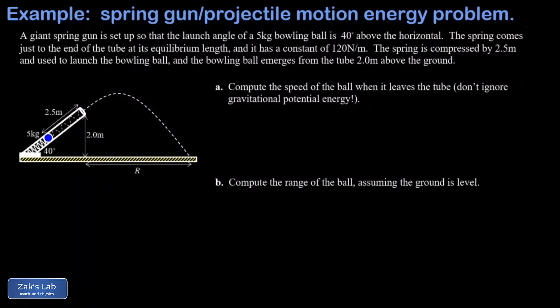In this video we have a cumulative review problem. I have a bowling ball with a mass of 5 kilograms being launched by a spring with constant 120 newtons per meter. The initial compression is 2.5 meters and the angle of this spring gun is given to us. The first part of the problem is to figure out if I launch this thing, how fast is the ball going when it flies out of the gun.